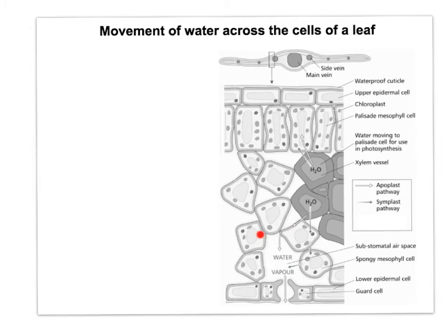With a lower water potential in the spongy mesophyll, water will move out of the xylem by osmosis into those cells and then out of the stomata by evaporation. So there's a water potential gradient from the xylem to the stomata, and water will move by osmosis along that gradient.